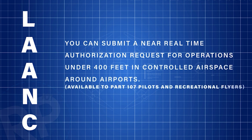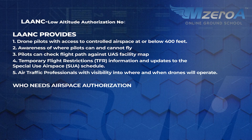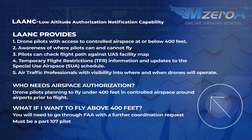LAANC is an FAA system that allows Part 107 pilots to request airspace authorization quickly and easily. It gives you real-time access to controlled airspace so you can fly your drone without conflicting with manned aircraft. LAANC provides a few key things: it lets you fly at or below 400 feet in controlled airspace around airports, you can see where you can and cannot fly, check your flight path against the UAS facility map, and it provides updates on temporary flight restrictions (TFRs) and special use airspace schedules.